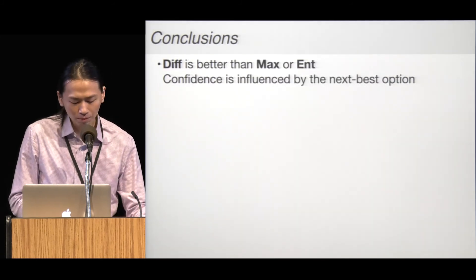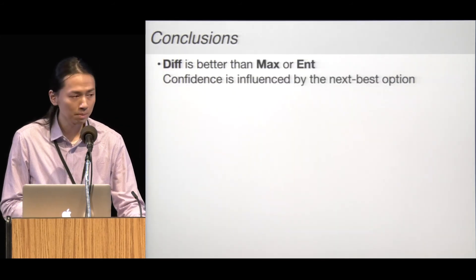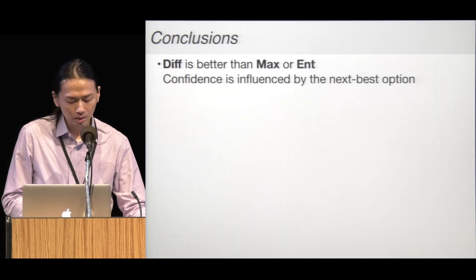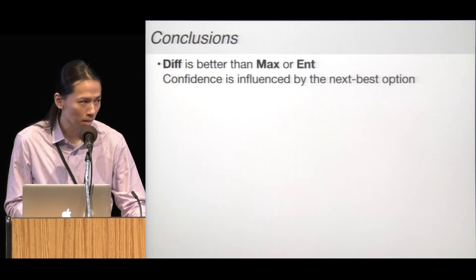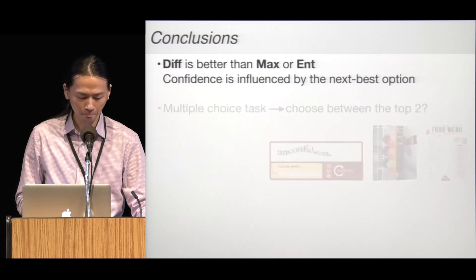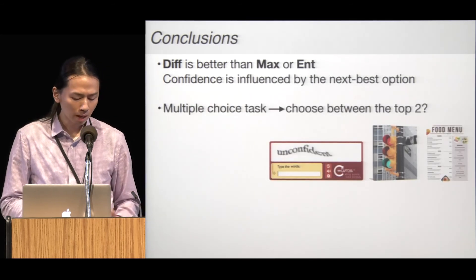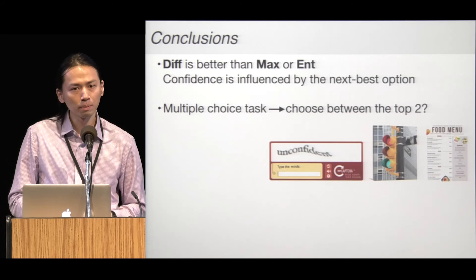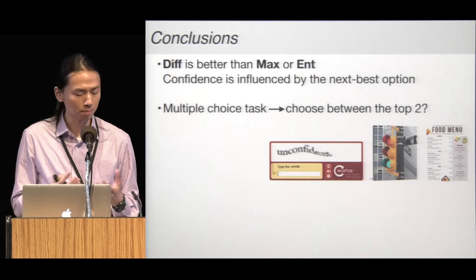To conclude, we found the confidence report is best explained by the difference model, and confidence depends on the next best option in the decision. The results might imply that when facing multiple options, observers seem to make a decision between the top two options.